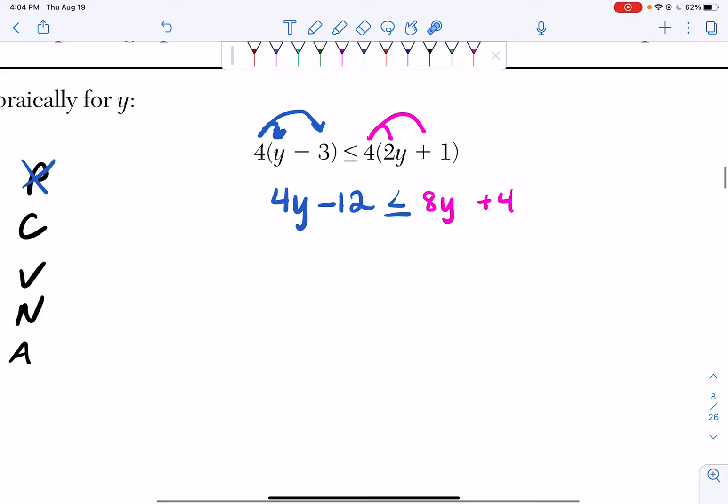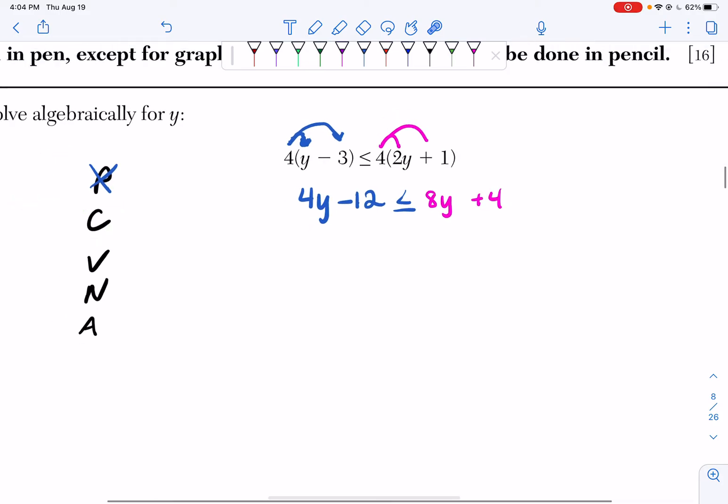My parentheses are gone, so I can cross this out. The C stands for combined like terms. So I have to ask myself, can I combine anything in that box? I can't combine a 4y and a minus 12. Can I combine anything in this box? No, I can't combine an 8y and a 4. So I skip this stage.